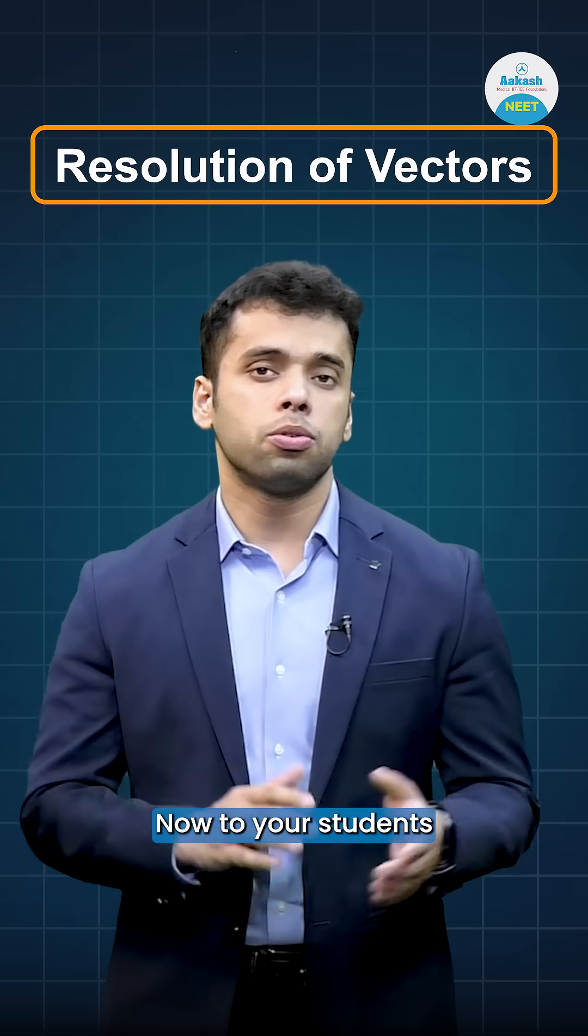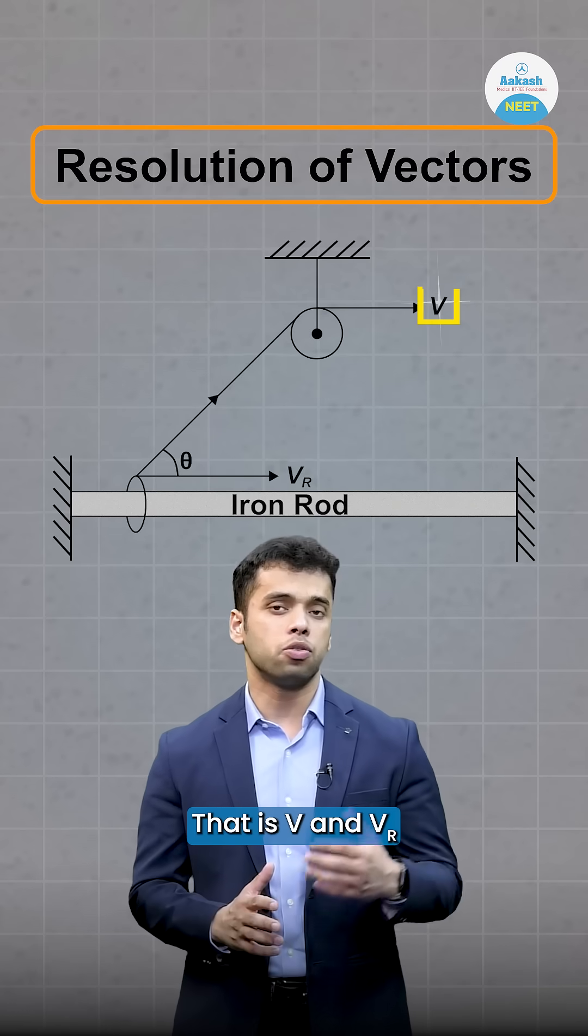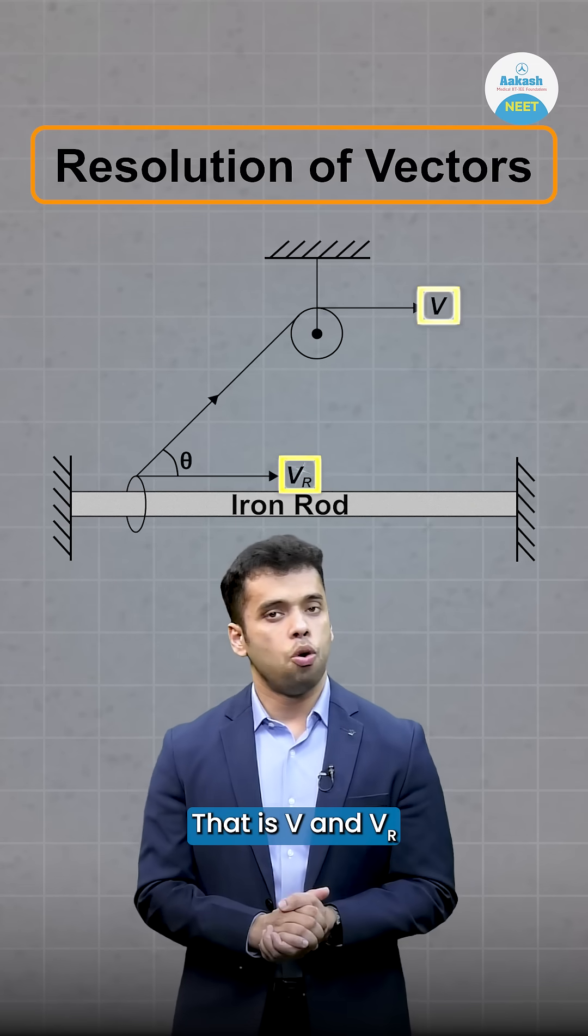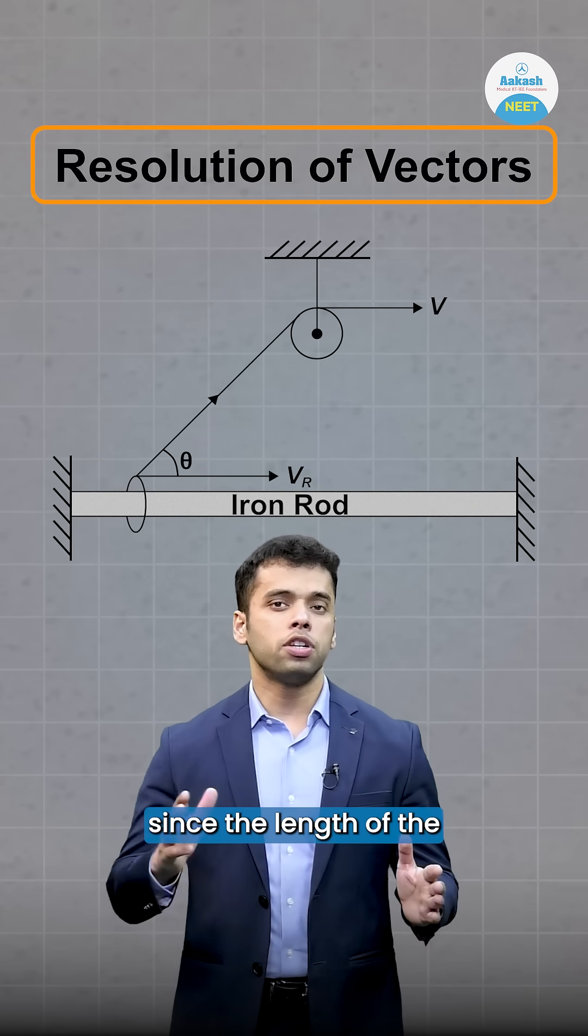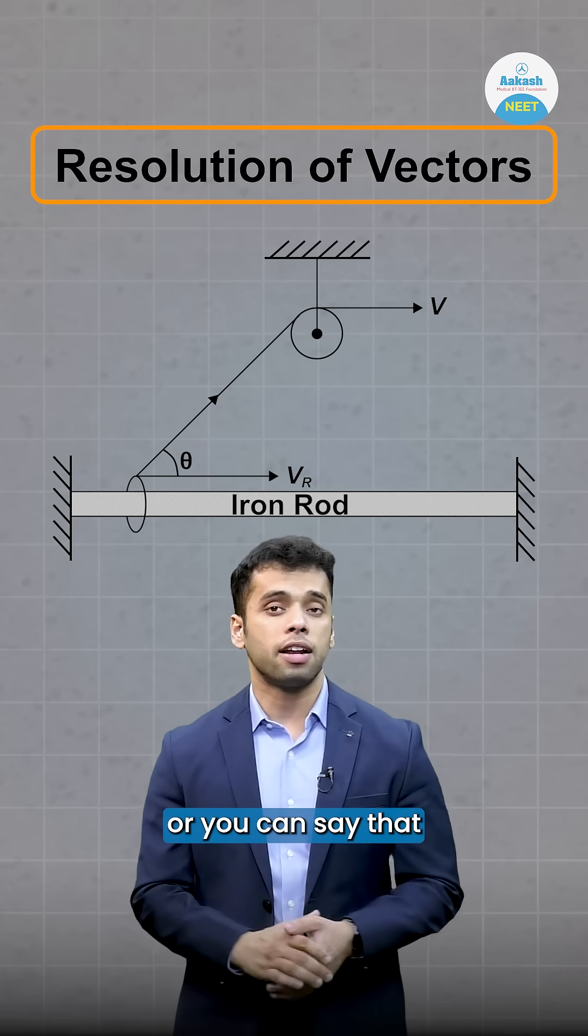Now, what is the correct relation between these two velocities, that is v and vr? Well, the concept says that since the length of the string is constant, or you can say that it is inextensible...